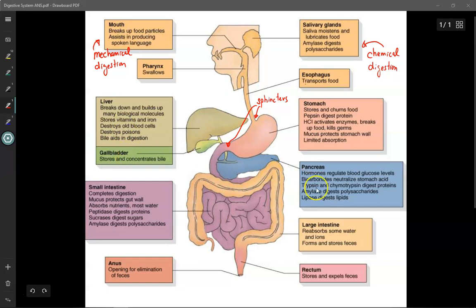Anyway, liver, gallbladder, pancreas, these are all accessory organs. They don't actually touch the food, but they are important because they release digestive enzymes that help to further break down our food.